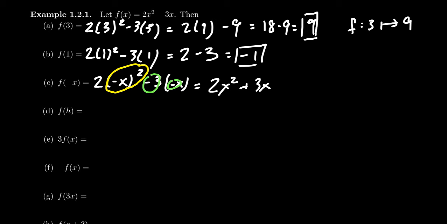If we evaluate the function at h, f(h) here, that just means replace each x with an h. You get 2h squared minus 3h. And that's all there is to it.